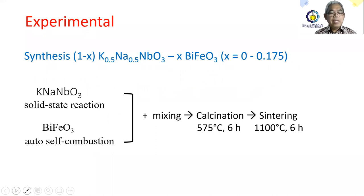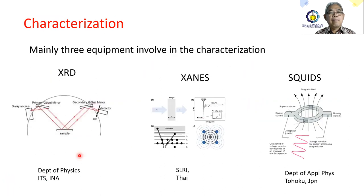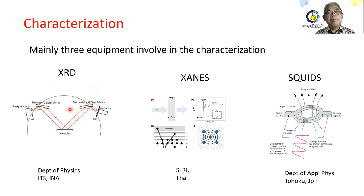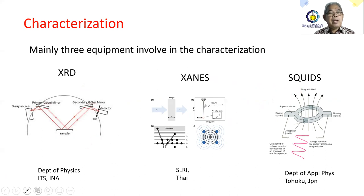To fulfill this objective, samples were prepared starting from powder synthesis up to sintering. The KNN was characterized through XRD for phase identification and structural determination, XANES for the oxidation state determination of iron, and SQUID for magnetization.